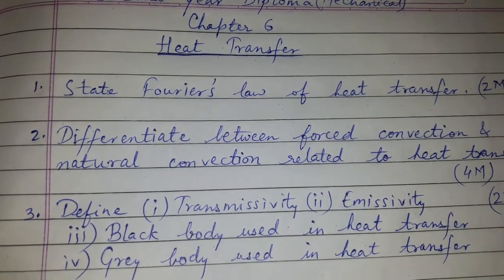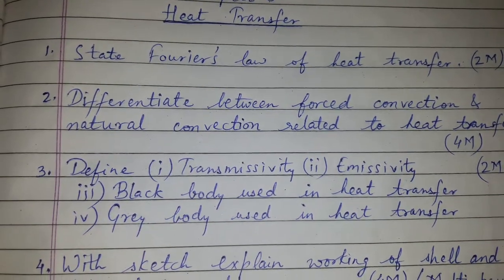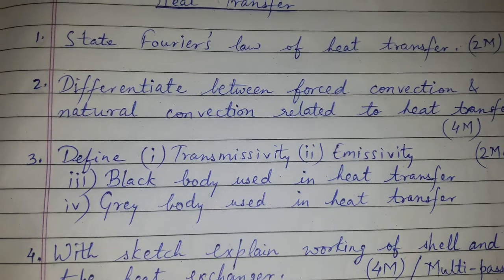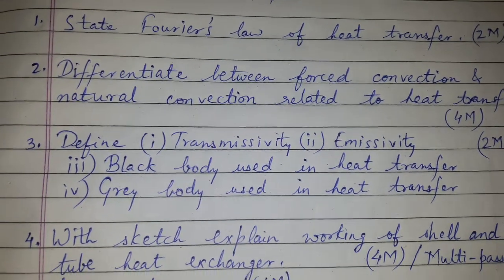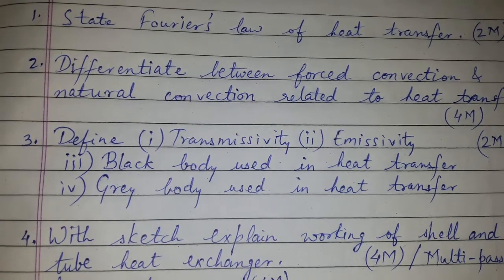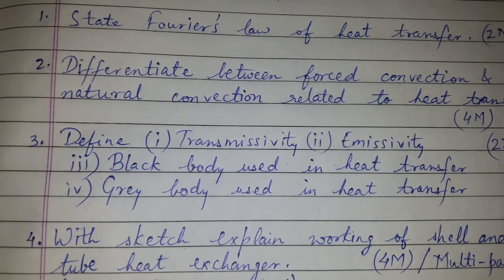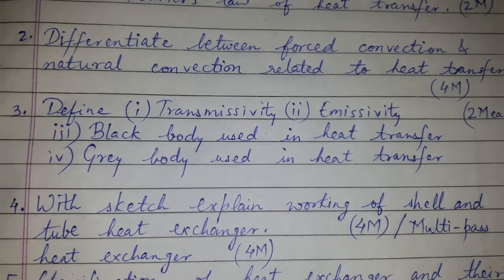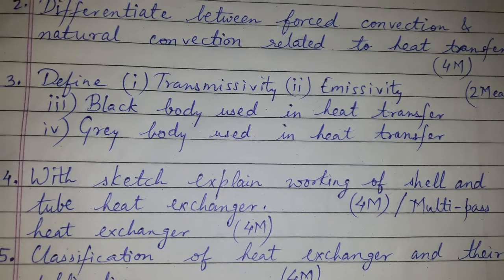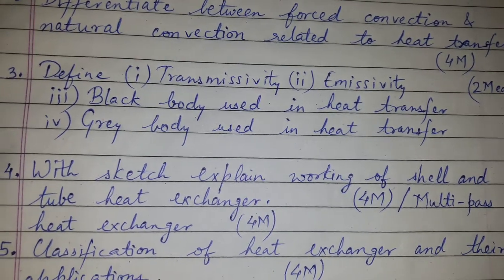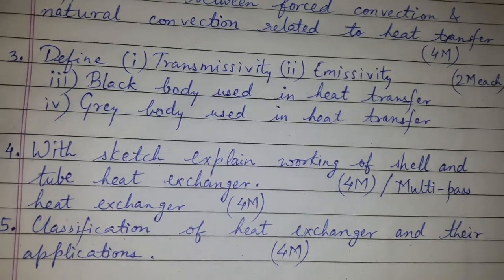State Fourier's law of heat transfer for two marks. Differentiate between forced convection and natural convection related to heat transfer — instead of natural they can write as free convection — so this can be asked for four marks. Question No. 3: Define transmissivity, emissivity, black body used in heat transfer, grey body used in heat transfer. These definitions can come for two marks each.